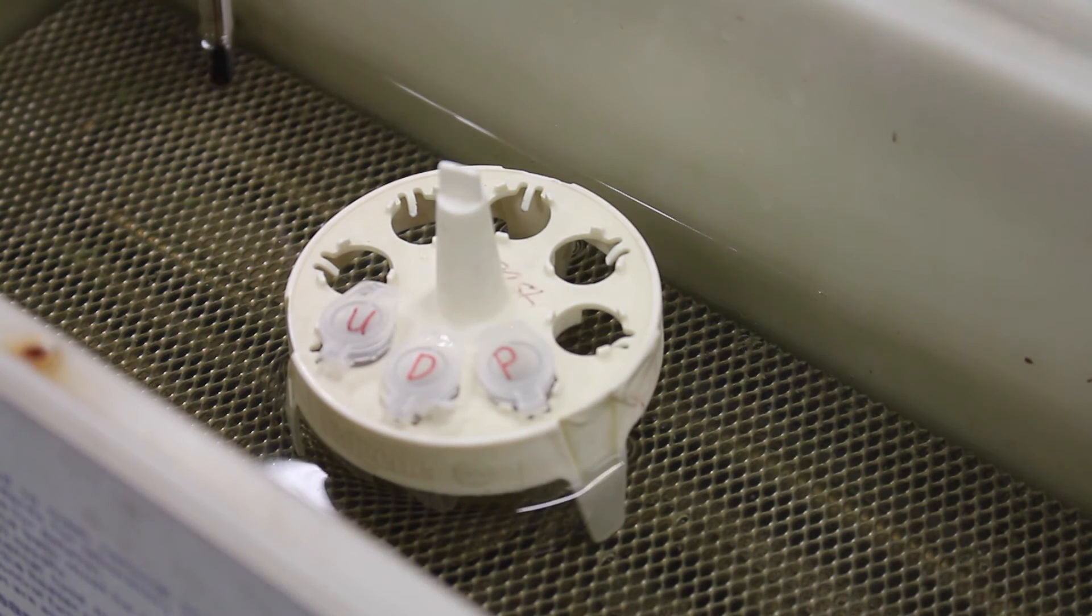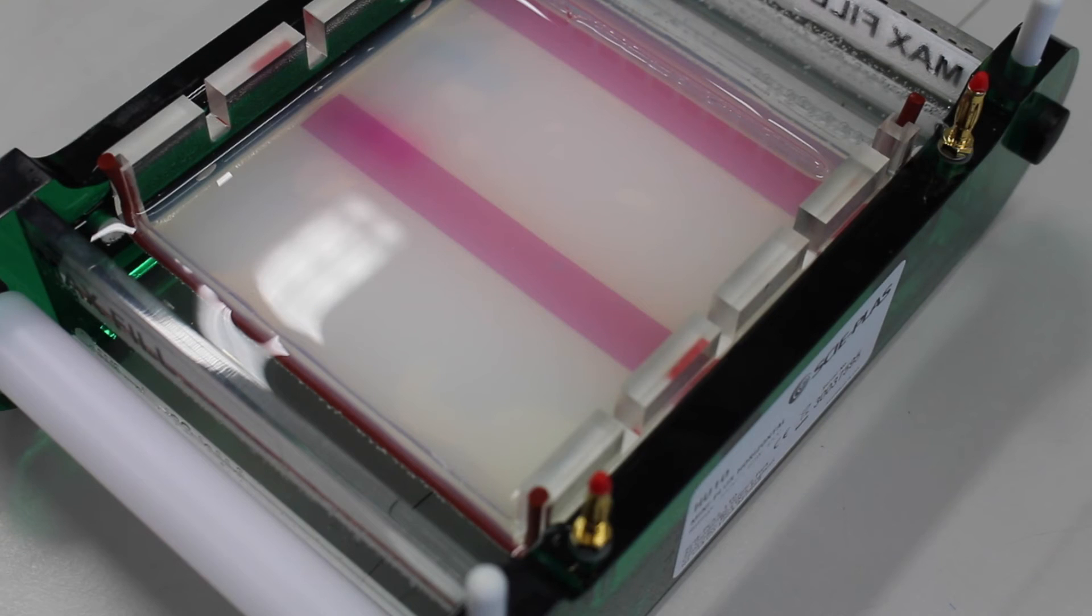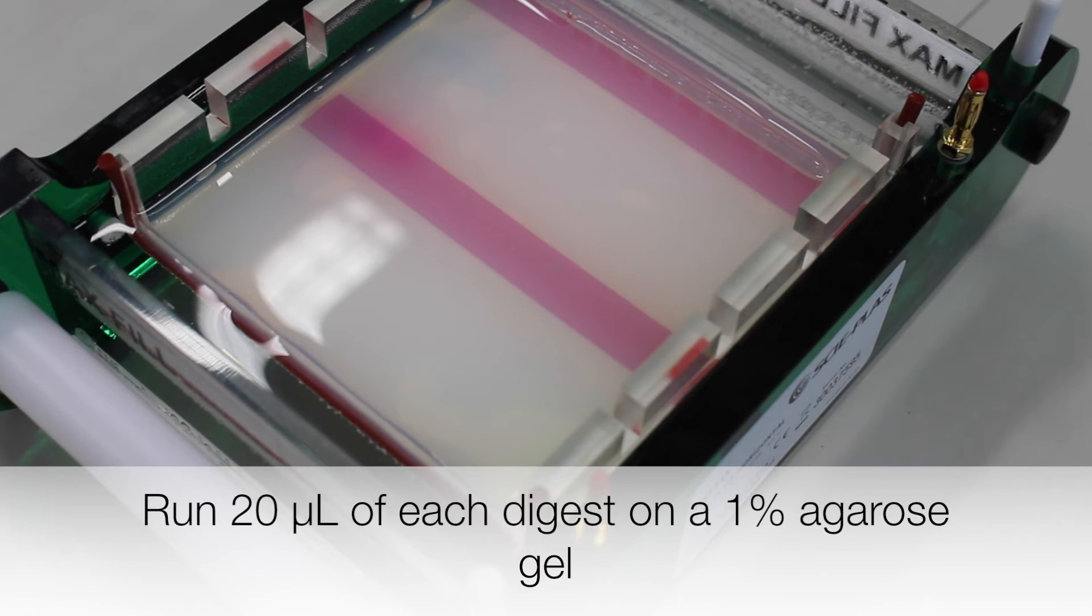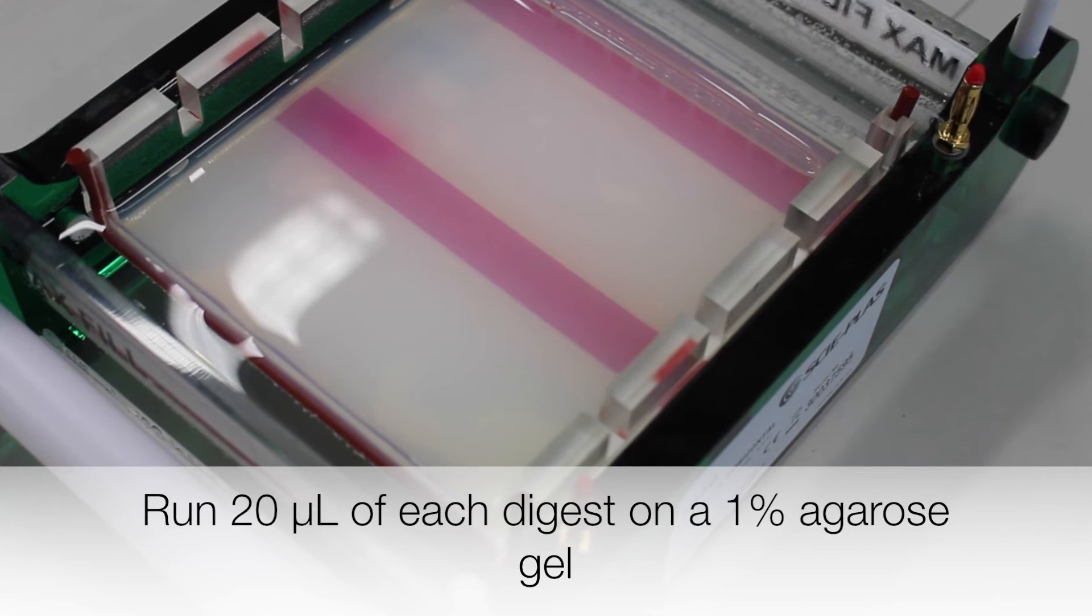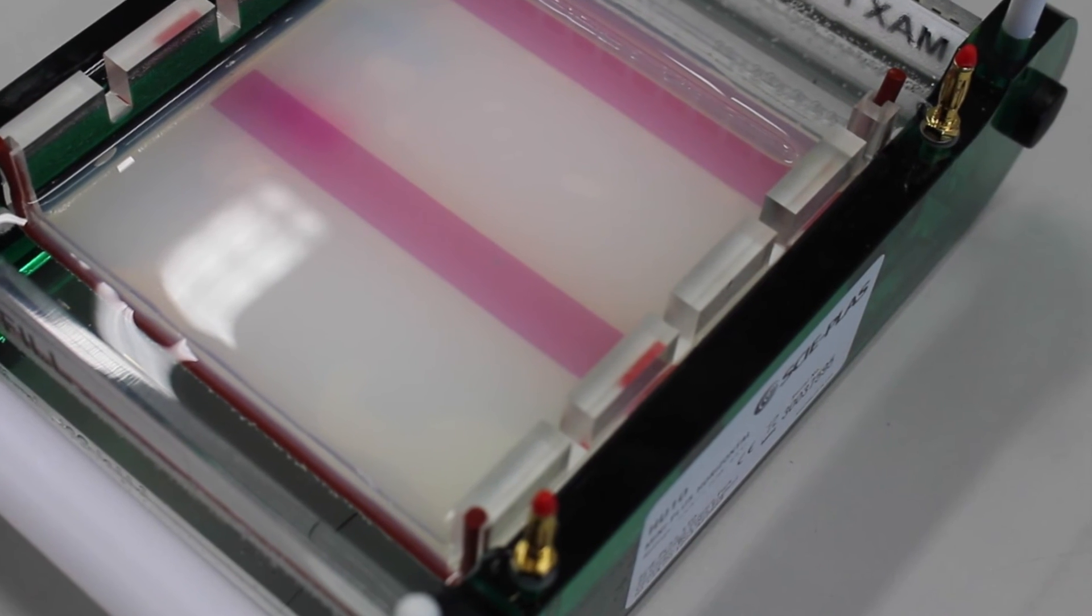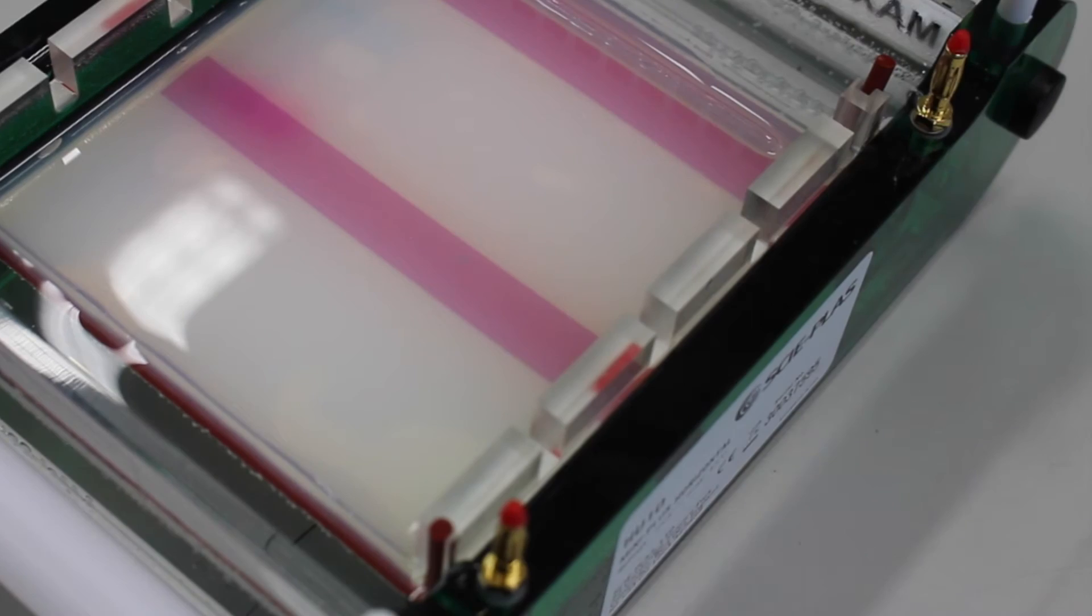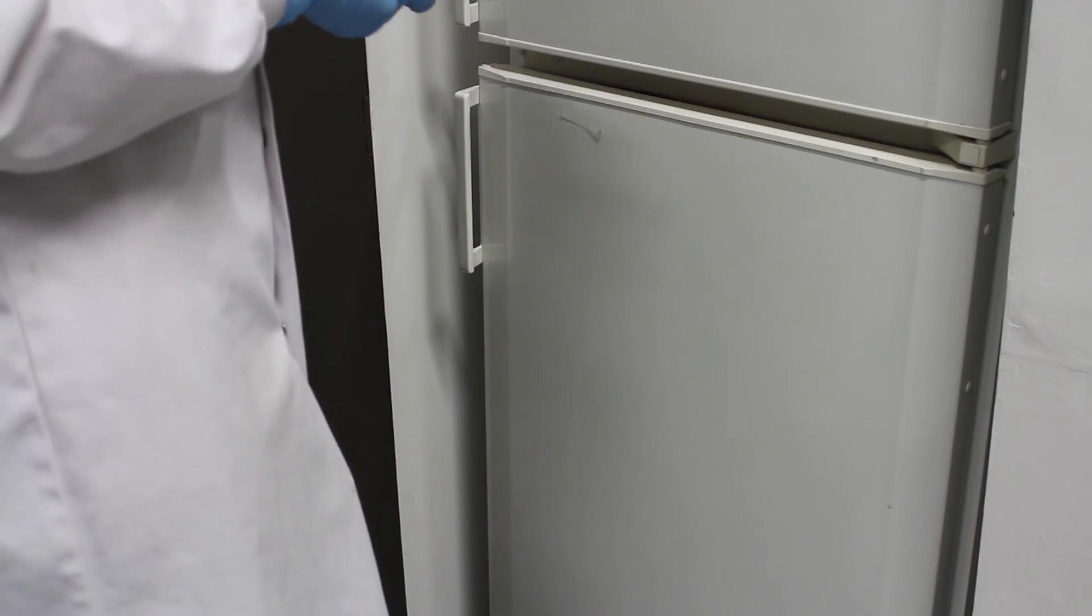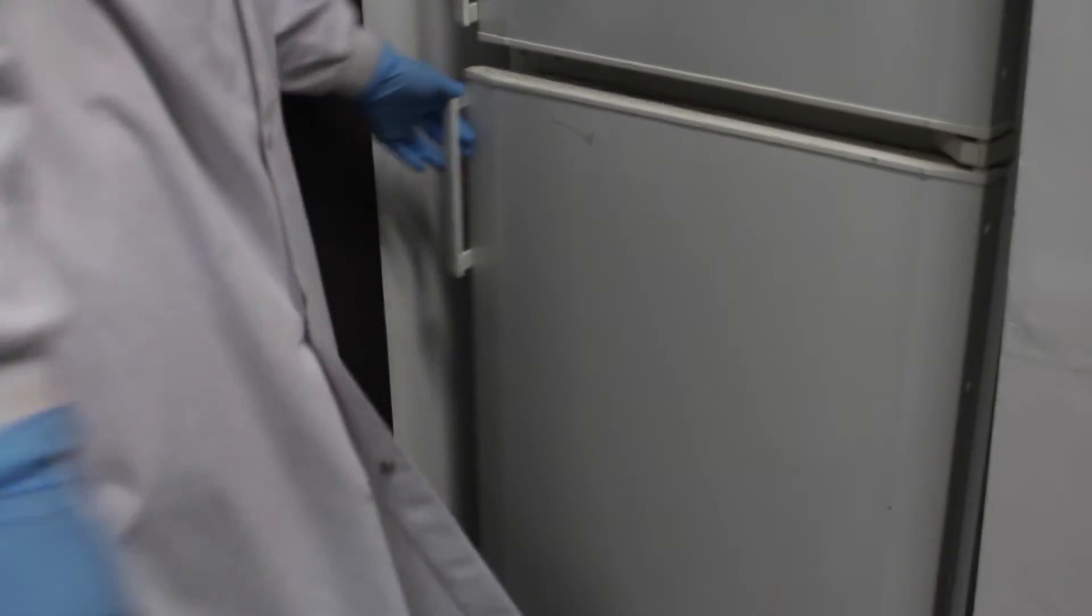From now on, the contents of the tubes are referred to as digests. To see if the digests worked, 2 microliters of each sample can be run on 1% agarose gel. If the digests have worked, the gel will show bands of expected lengths. Please click on the link provided to see how to prepare an agarose gel. The plasmids can then be stored at minus 20 degrees Celsius, or you can proceed directly to the ligation step.